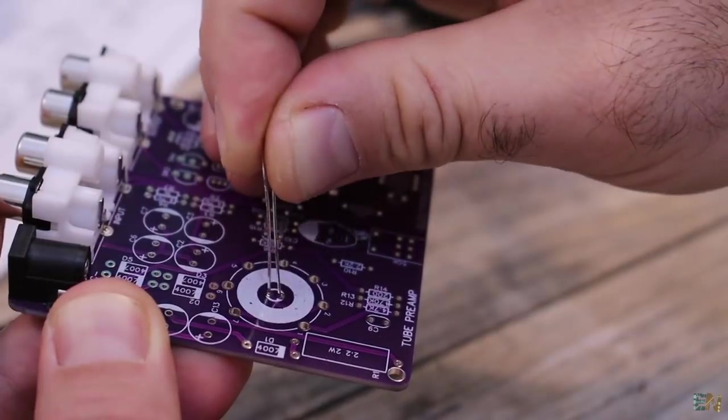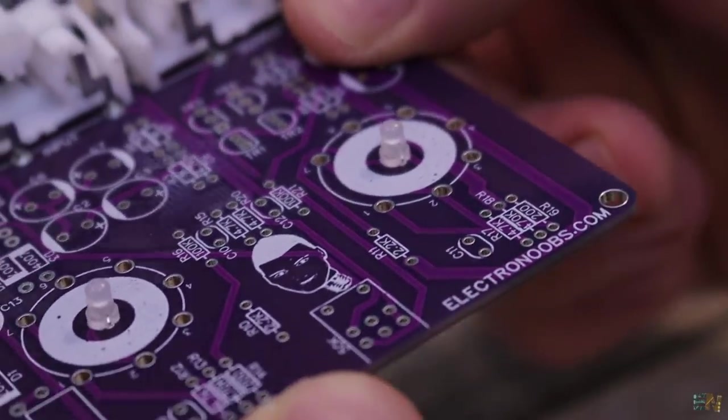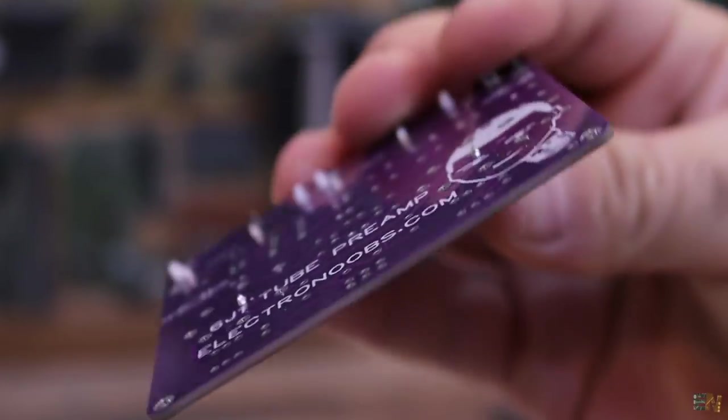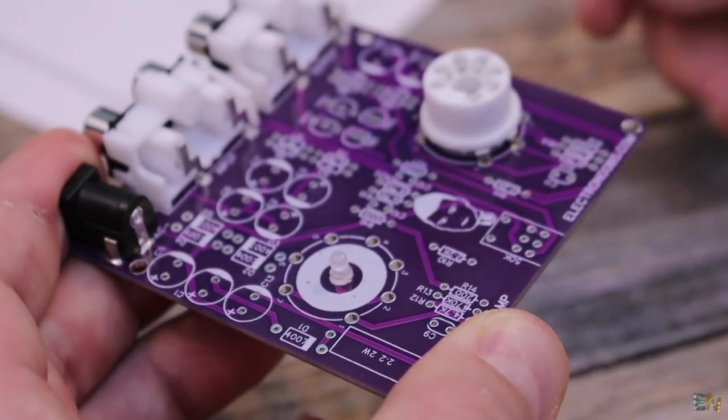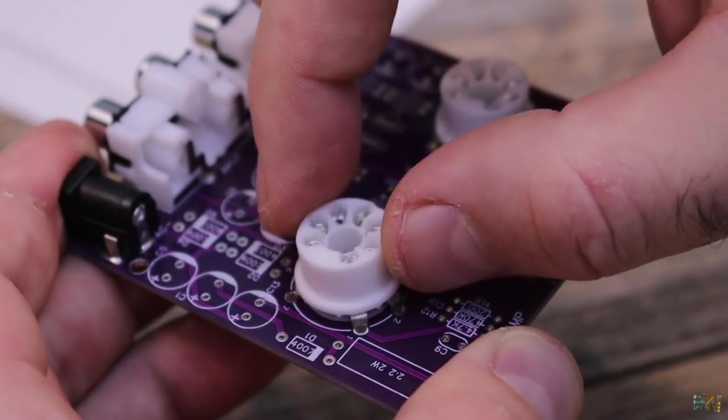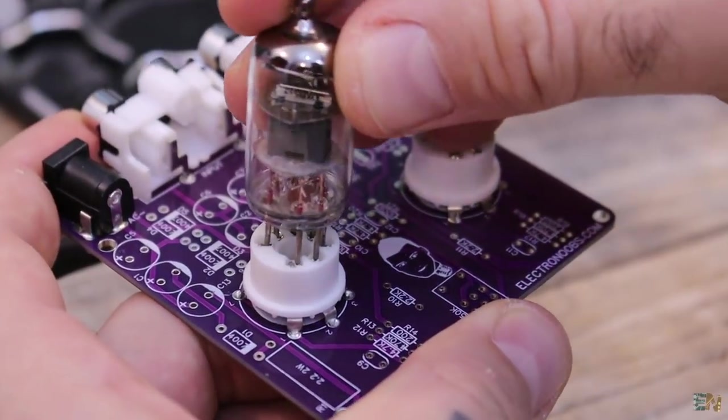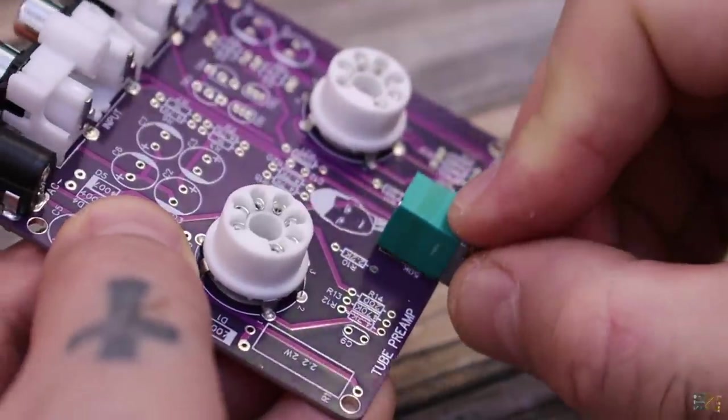Before we add the vacuum tube sockets, we need to solder some LEDs below. This will glow through the tubes and like that we give them a cooler look. Now we can solder the vacuum tube sockets. We use this so we don't have to solder the tubes directly to the PCB. Then I also add the volume potentiometer and the on and off switch.